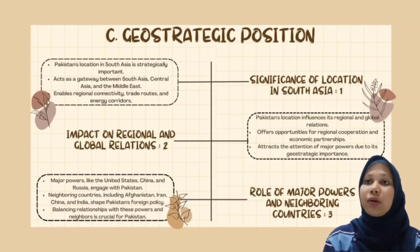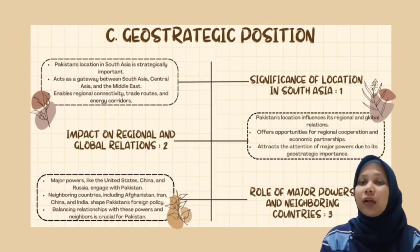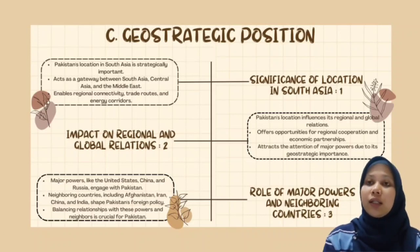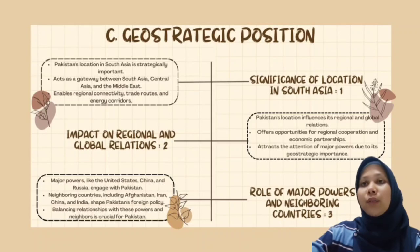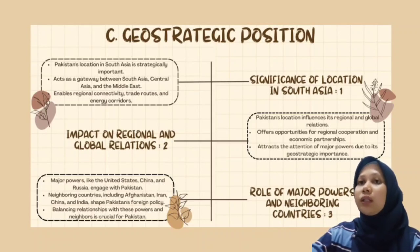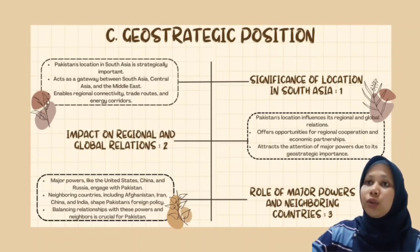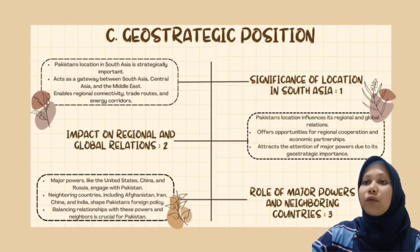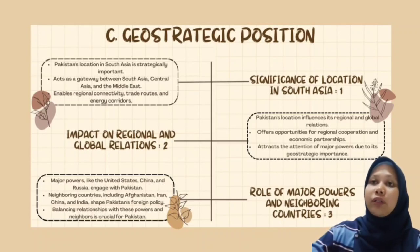Pakistan's location has a major impact on regional and global relations. Its relations with neighbors, particularly India, are often tense, and relations with the US have also been strained in recent years. The United States has been a long-time ally with Pakistan, but relations have been strained recently. China has become an economic and military partner of Pakistan, and the two countries have a closer relationship. India is Pakistan's main rival, and the two countries have a long history of conflict.